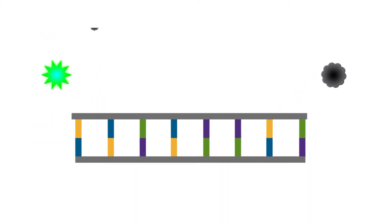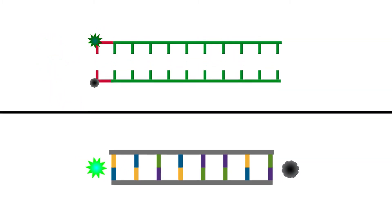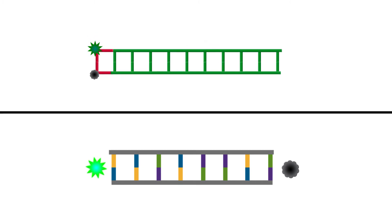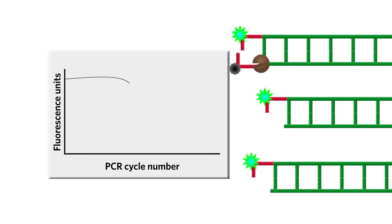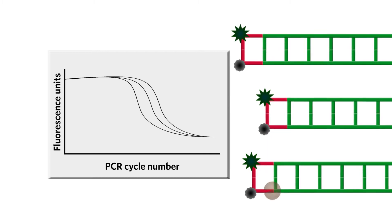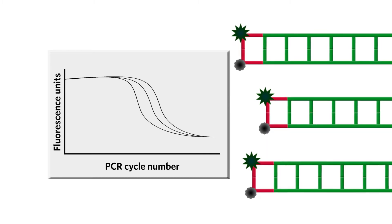The way the reporter and quencher are used in Multicode means a probe is not required and a decrease in fluorescence is looked for instead of an increase. The decrease in fluorescence, with the incorporation of more and more iso-C and iso-G pairs, is directly proportional to the amount of amplicon.